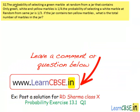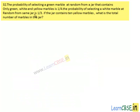Question No. 32. The probability of selecting a green marble at random from a jar that contains only green, white and yellow marbles is 1/4. The probability of selecting a white marble at random from the same jar is 1/3. If the jar contains 10 yellow marbles, what is the total number of marbles in the jar?